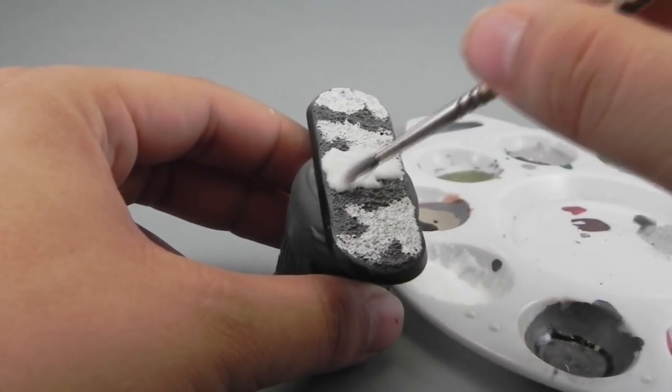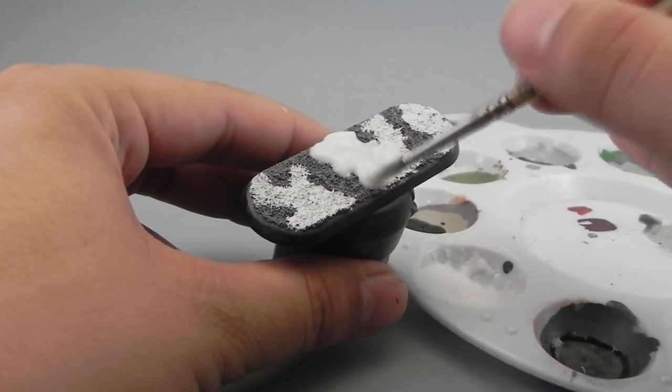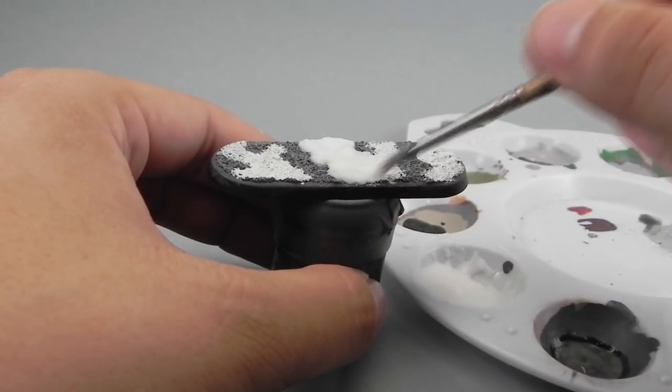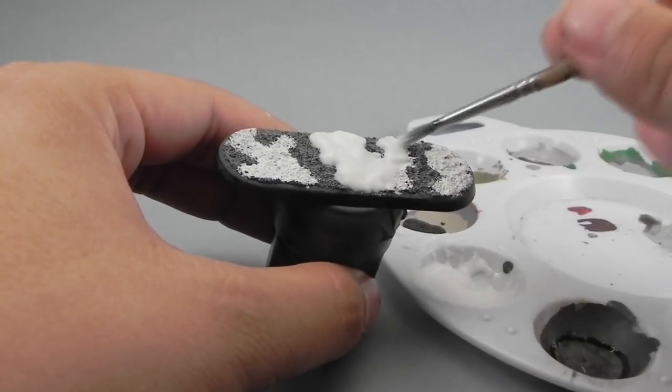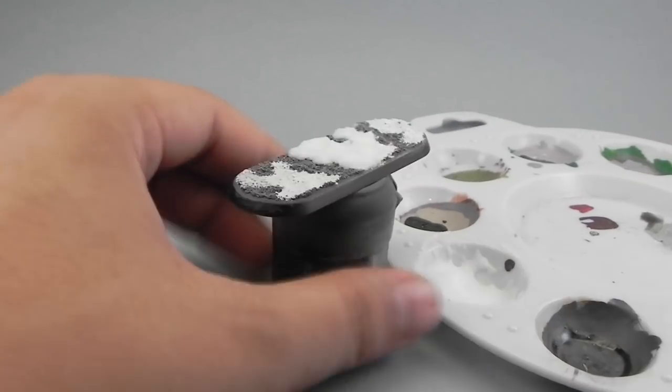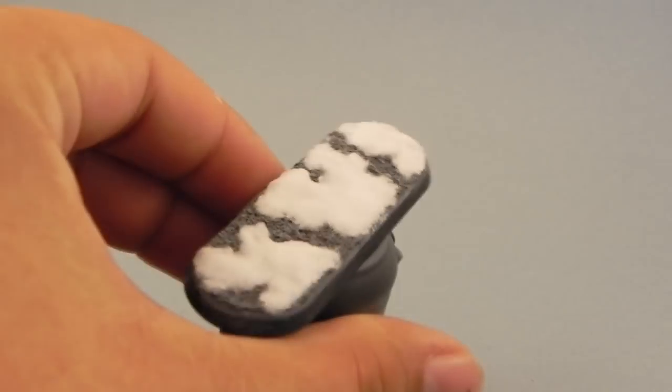So I hope that the video of me mixing the snow helps you out a little bit to find the right consistency that is for you. And remember you don't have to use the grey on the bottom, you can use brown, black or any other color that you like.